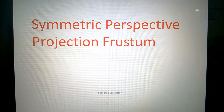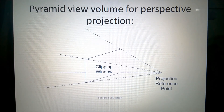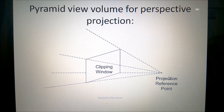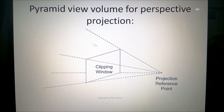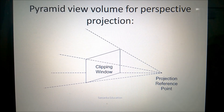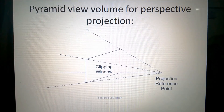Symmetric perspective projection frustum. First we will understand the perspective projection view volume. Here you can see it has been shown in the diagram that an infinite pyramid view volume for a perspective projection. The point is the projection reference point and the view volume has been shown here, and this is the clipping window. All the planes — the top planes, bottom planes, and the side planes — are meeting at the projection reference point.